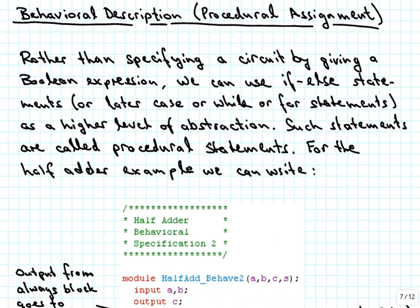Specifying a circuit by a Boolean expression is still rather close to the details of a particular implementation with AND and OR gates, and formulating it in terms of a Boolean expression still requires quite a bit of work if you want to describe a large circuit. So rather than using that, we can use things like an if-else statement — if one thing happens then do this, if another thing happens then do that. There is also a case statement in Verilog where you can distinguish between, say, four different cases, or there is a while statement and for statements. This gives us a higher level of abstraction, and statements of this form are called procedural statements.